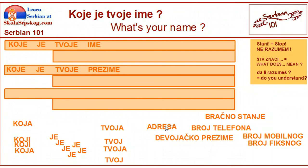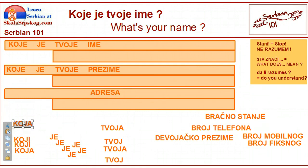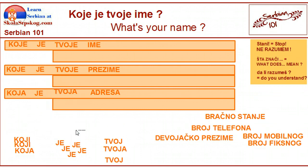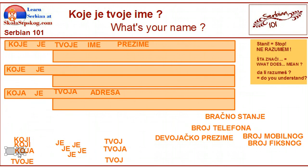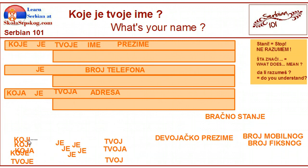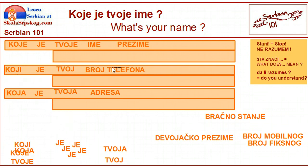Let's try something different. Adres, adres. Koje je tvoje ime is the same structure as koje je tvoje prezime. So we can change this one to something different — we have three options. For instance, broj telefona. Koji je tvoj broj telefona?